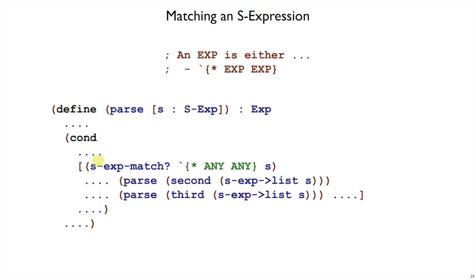So what we're going to do instead is use s-exp-match? to check the outer shape, the initial shape. And then, once we know that s at least has the right basic shape, then we know that we can pull the second part out of it and pass that second part to parse. That call here, this parse second s-exp->list, will make sure that this ANY right here, as it appears in s, is actually some valid expression according to our description of what expression should be.